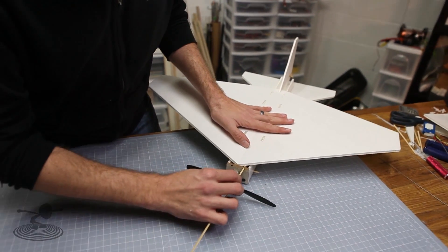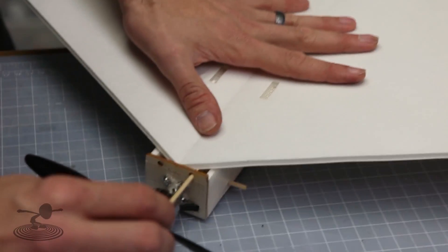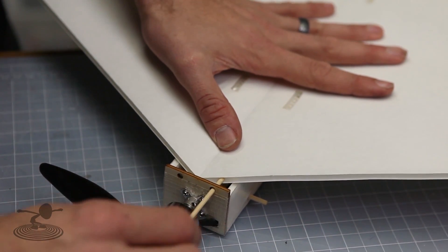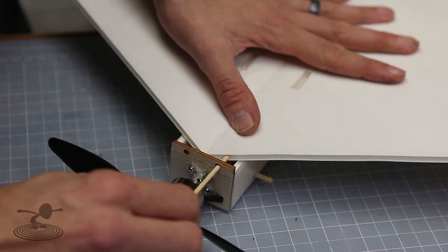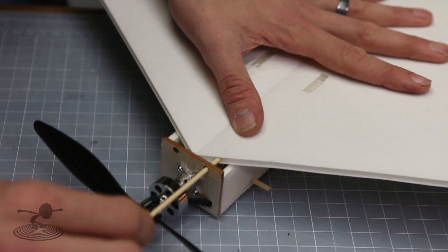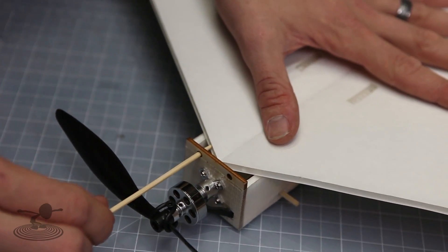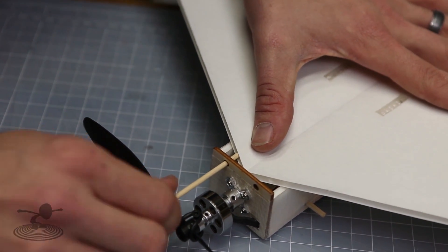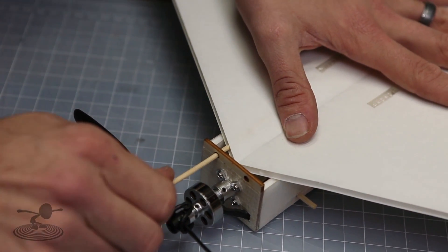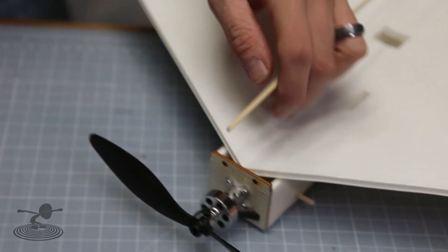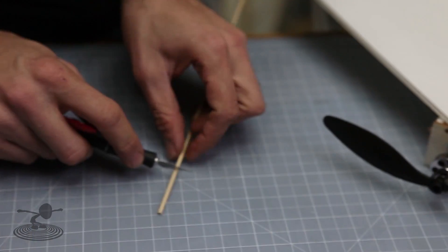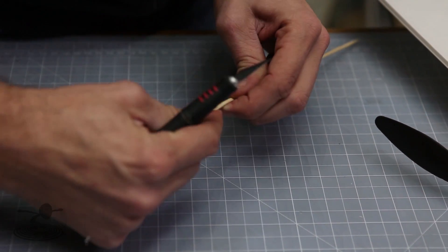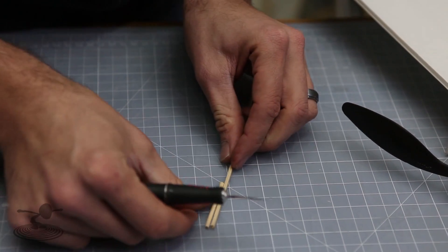Our next step is to install the front alignment dowels that are going to hold our front of our wing onto our power pod. Simply go ahead and push through the firewall about an inch and a quarter into the wing with a twisting motion to act like a drill bit. Do this on both sides making sure to stay as perpendicular as possible to the firewall. Once you're happy with that, cut your sticks roughly an inch and a quarter to an inch and a half long, keeping both of them the same size.